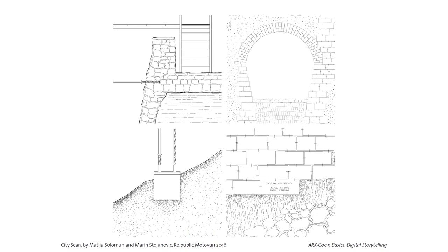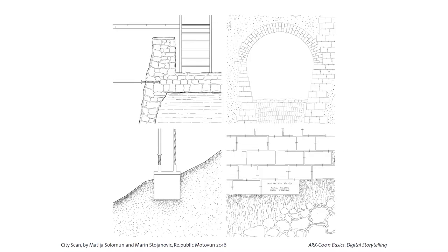This next drawing is a vertical section of an intervention in the city — there's an old core and scaffolding representing the new part. What's interesting is how the students portrayed different types of materials using only lines: earth, stone blocks, gravel, rock.